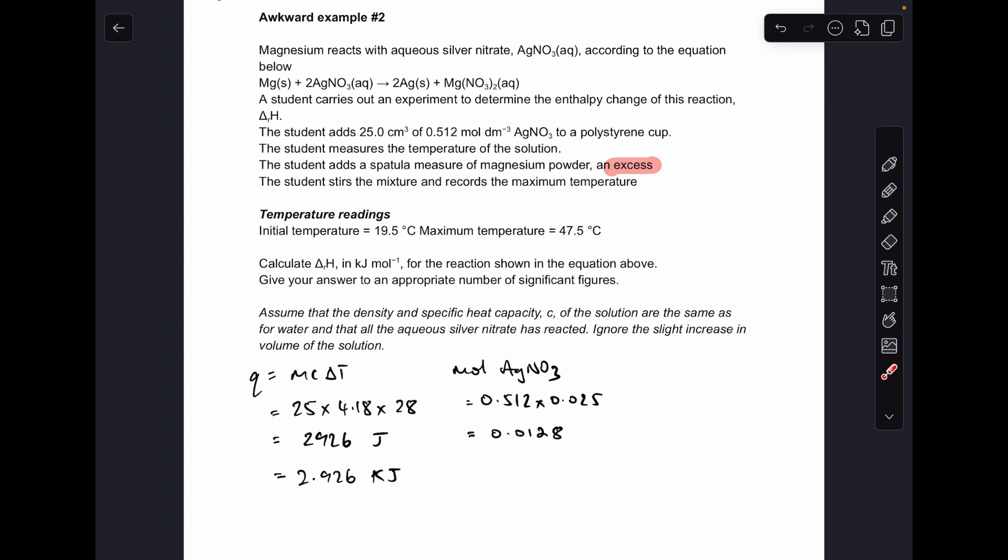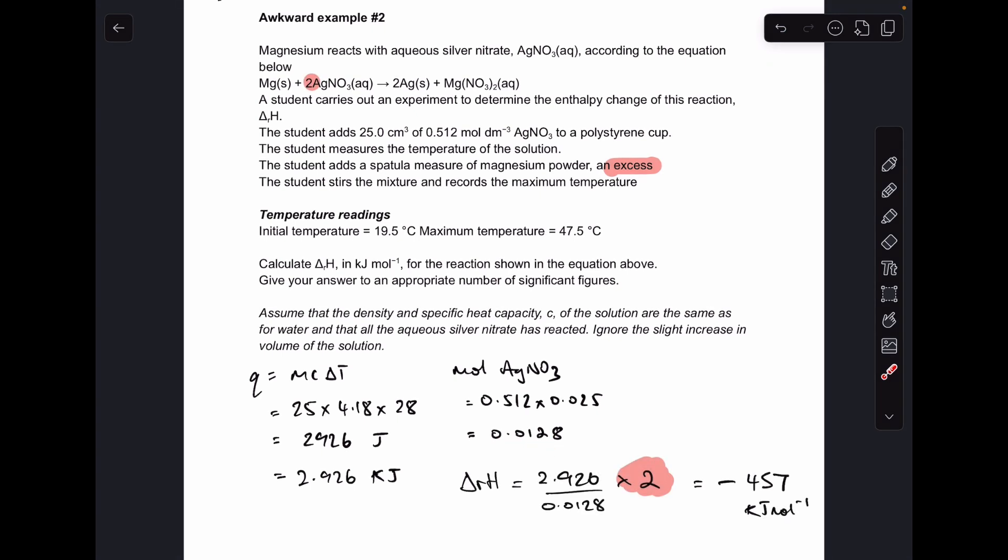Remember the magnesium's the excess chemical. So the moles of silver nitrate concentration times volume, 0.0128.